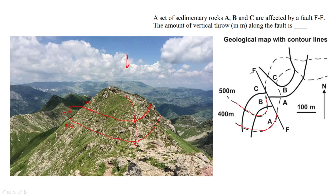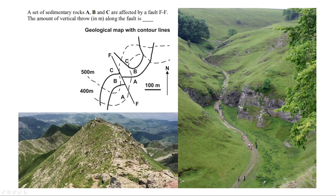So this part — the left side of the fault — the topography represents the sloping ridge. Now see this image. This is an image of a valley.